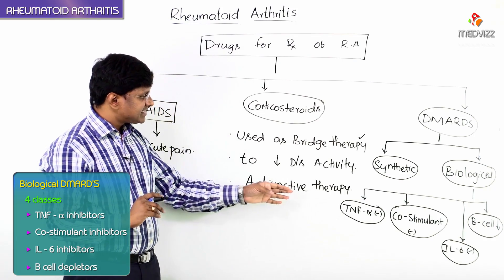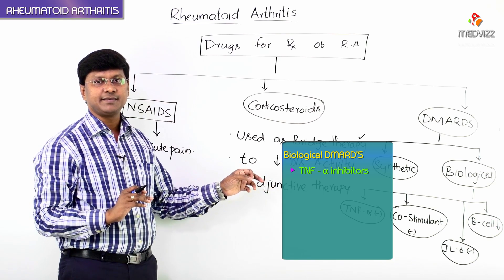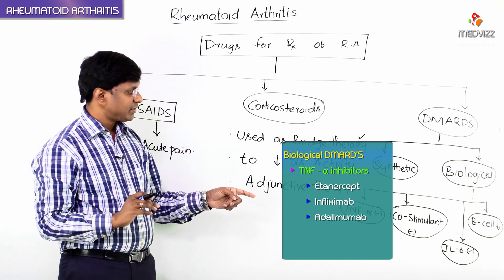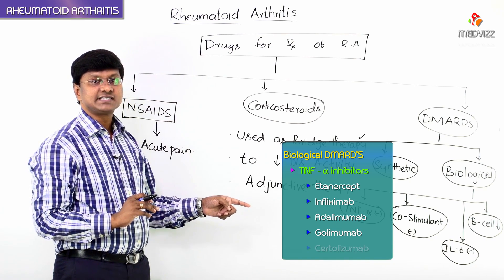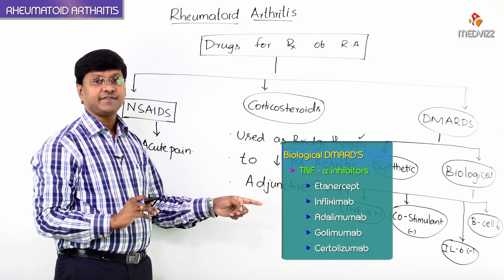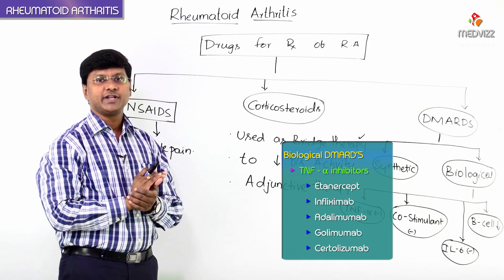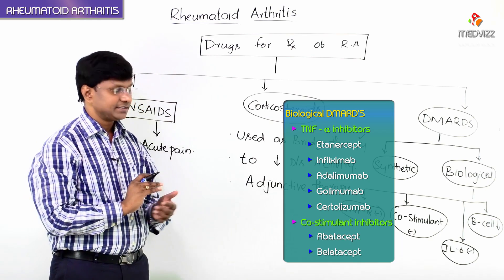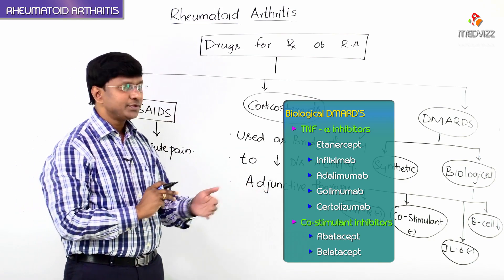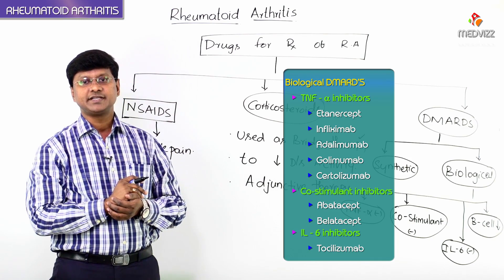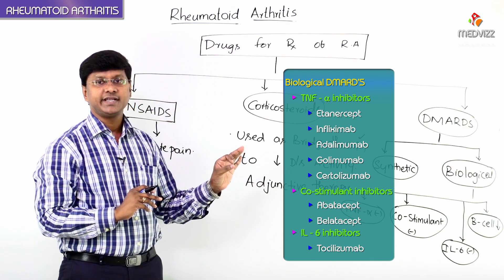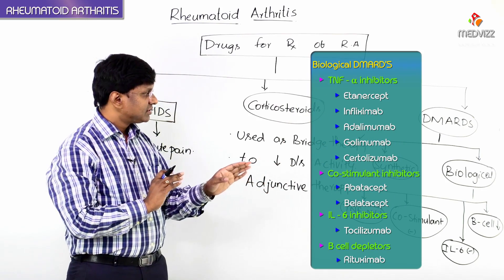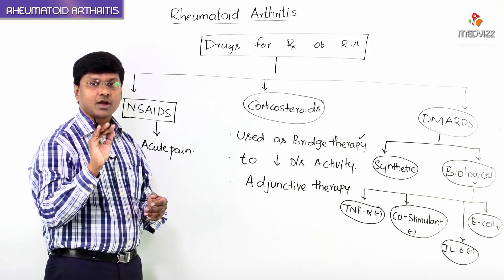The TNF-alpha inhibitors include etanercept, infliximab, adalimumab, golimumab, and certolizumab. The co-stimulant inhibitors include abatacept and belatacept. The interleukin-6 inhibitors are represented by tocilizumab. And lastly, the B cell depletors are rituximab. These are all your biological DMARDs.